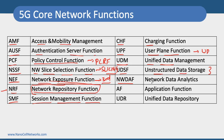NWDAF is Network Data Analytics Function. We are going to have a lot of influence of machine learning and AI in 5G, and that is where NWDAF is going to play a major role. AF are the Application Functions. UDR — Unified Data Repository — is a centralized data repository that can be accessed by UDM, PCF, and Network Exposure Functions.